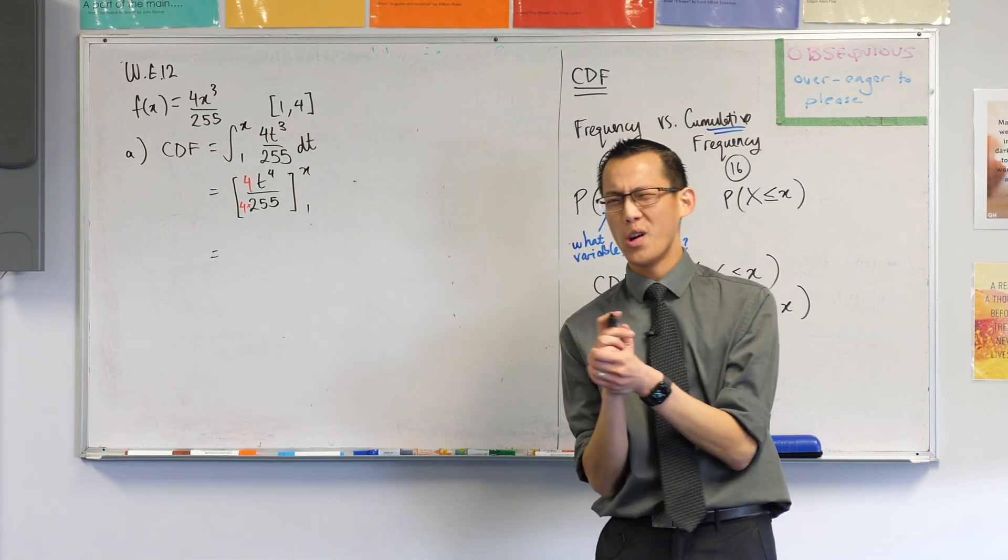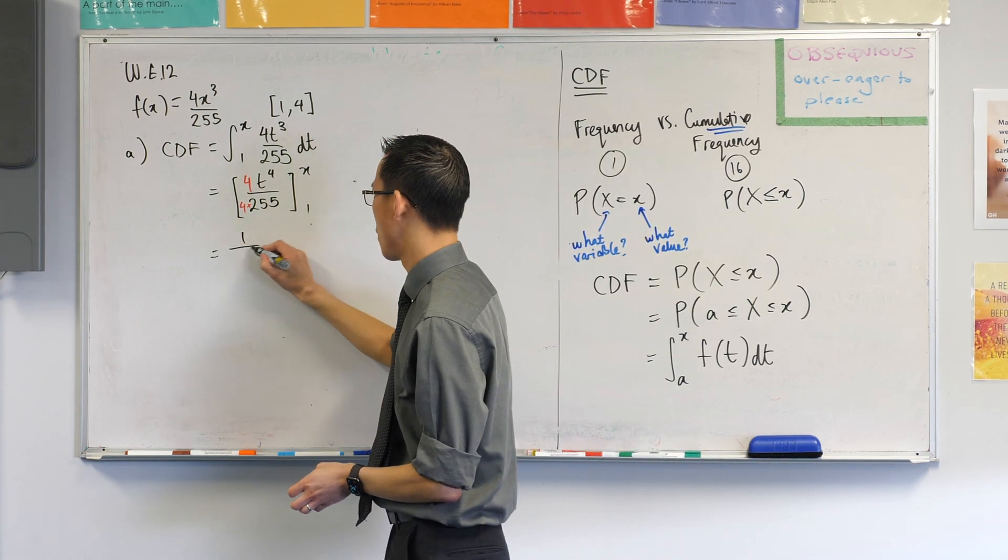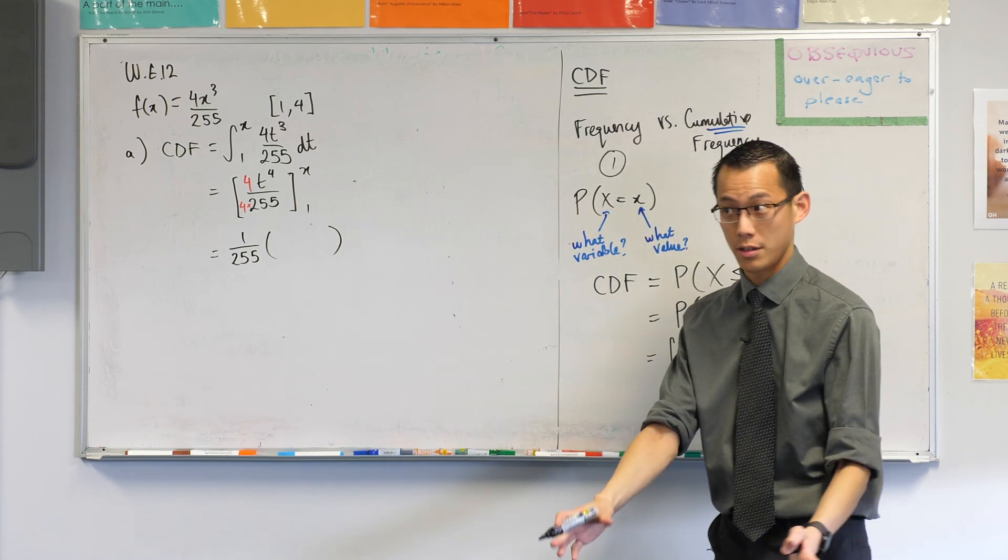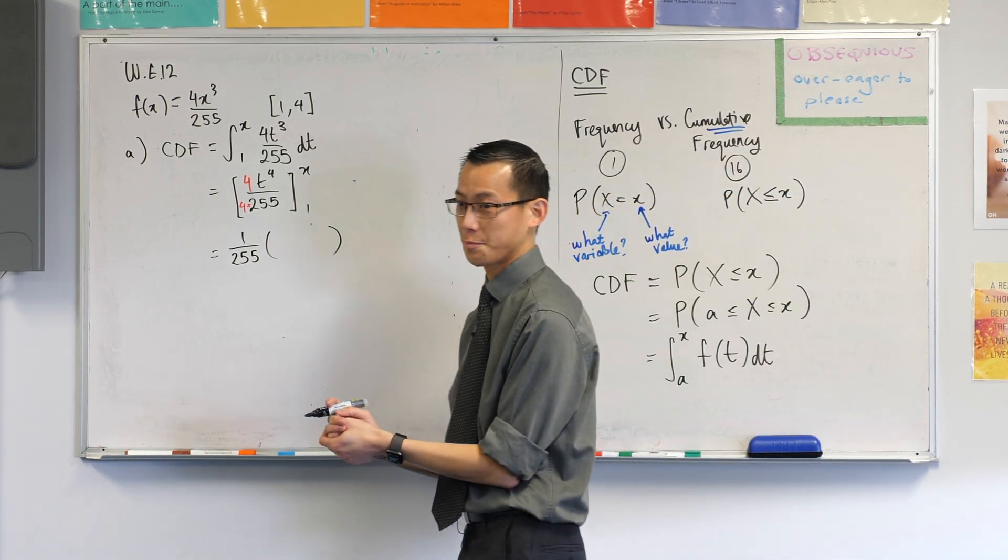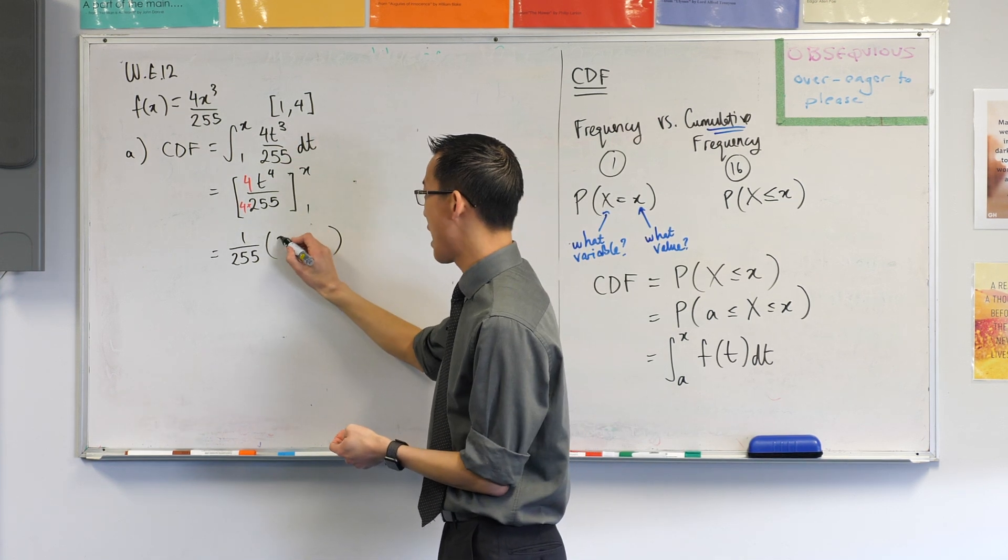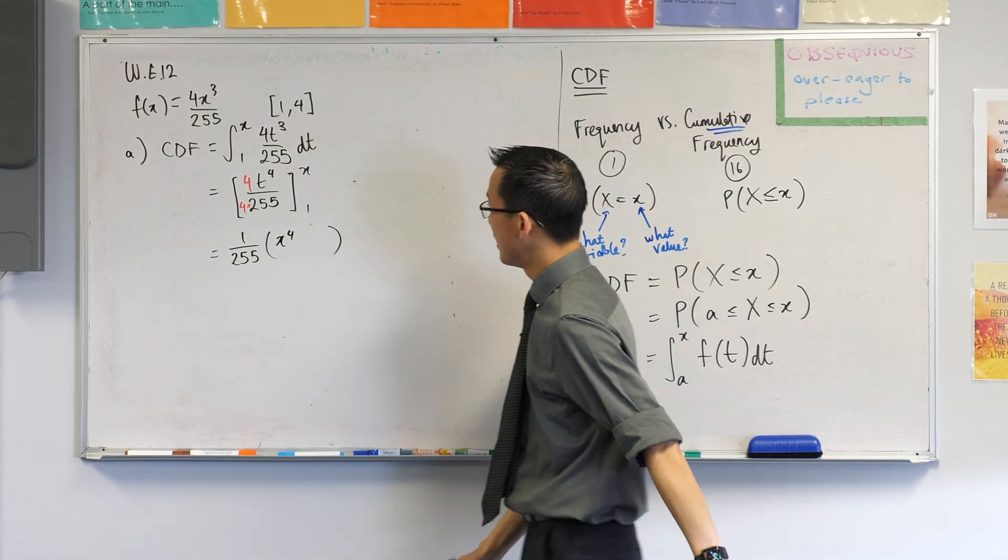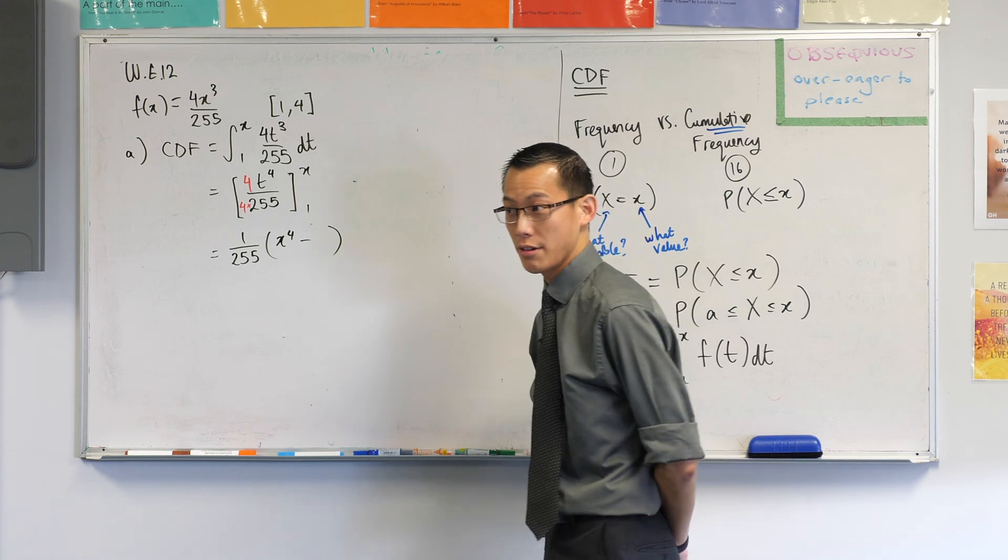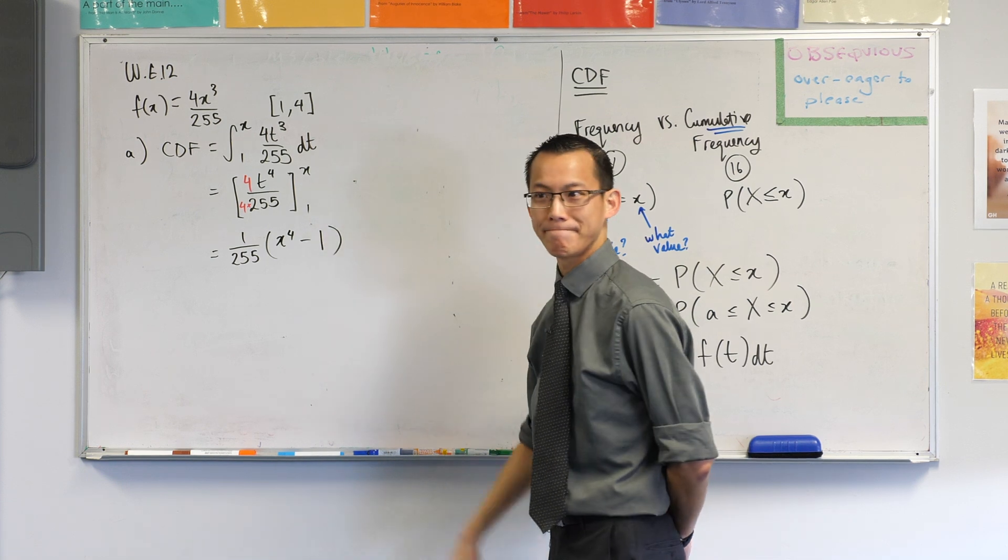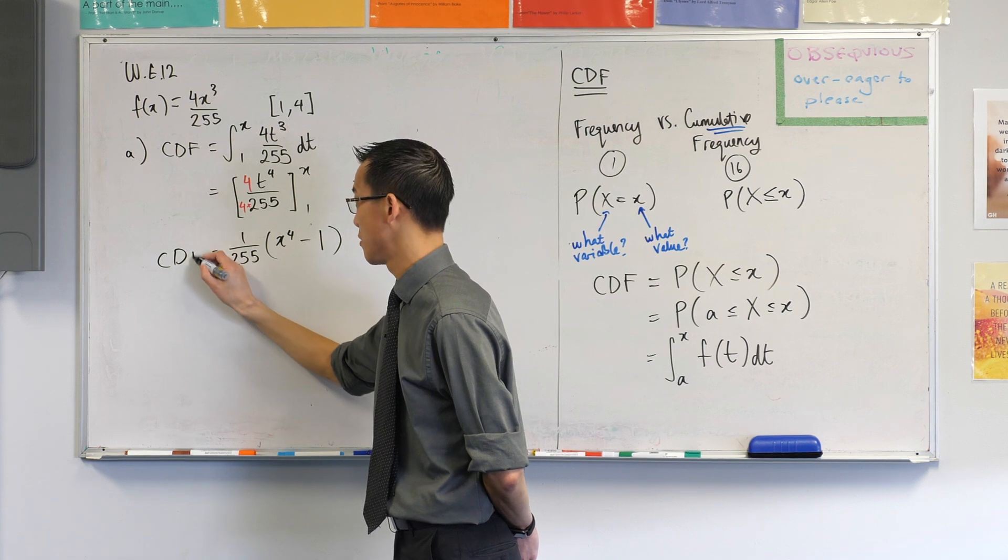All right, so that 1 over 255 is just a constant coefficient, so I'm going to take it out the front. 1 over 255. And then here come my upper and lower boundaries. What is my upper boundary? It's x. So t to the 4 becomes x to the 4. I've already done the over 255, it's already out the front. And then here comes the lower boundary. The lower boundary is just 1, so 1 to the power of 4 is 1. That's it. That is the cumulative distribution function.